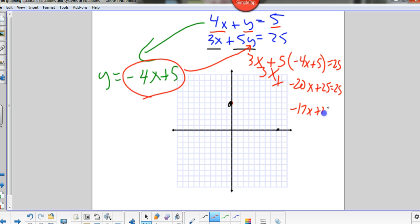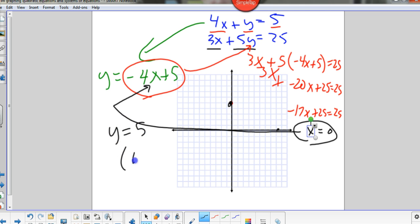I get negative 17x equals 0. So x equals 0. So with x equal to 0, go ahead and pop that in, either equation. And y equals 5. So 0, 5 would be where those two lines intersect.